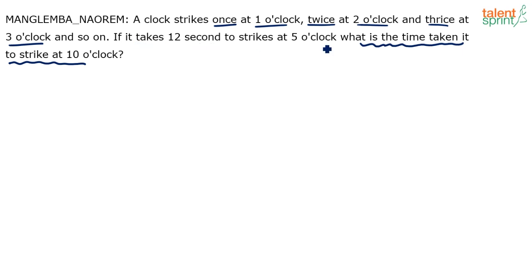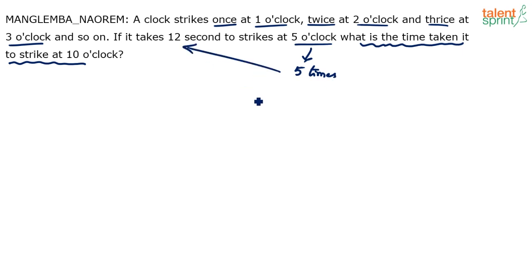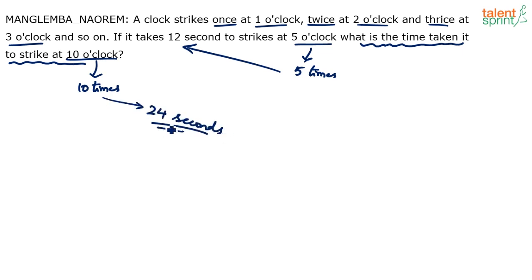So it takes 12 seconds to strike at five o'clock. At five o'clock the clock strikes five times, and for striking five times it takes 12 seconds. At ten o'clock it strikes ten times. So for ringing ten times it should take 24 seconds — and that's your answer.